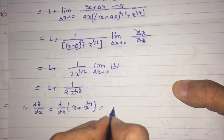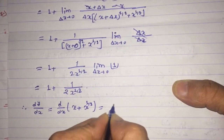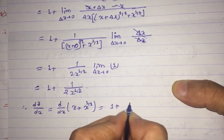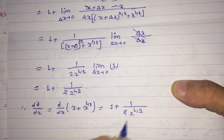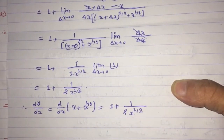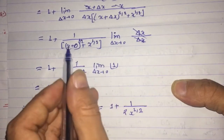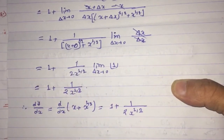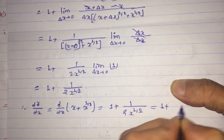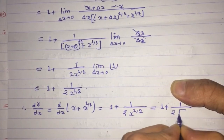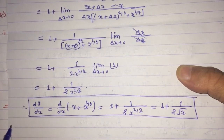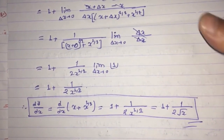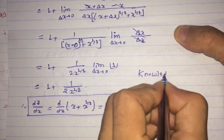We are left with 1 plus 1 divided by [2 times x^(1/2)]. Therefore the value of dy/dx — writing d/dx of (x + x^(1/2)) in place of dy/dx — is equal to 1 plus 1/(2x^(1/2)). This is also written as 1 plus 1 divided by (2√x). This is the derivative of x plus √x from the first principle.